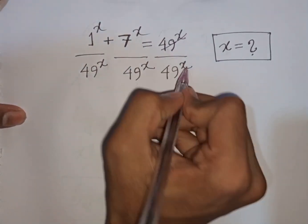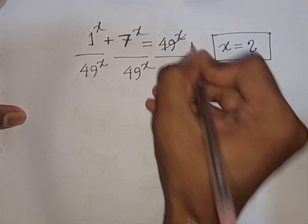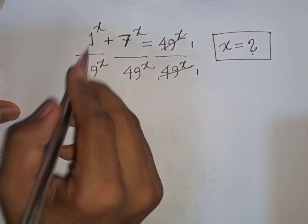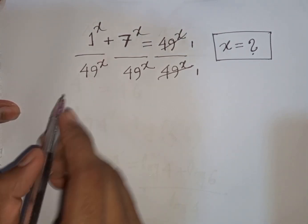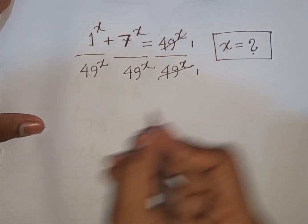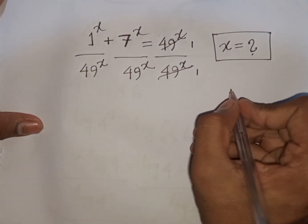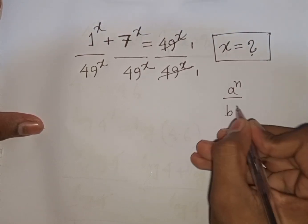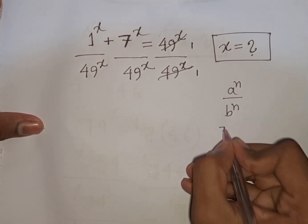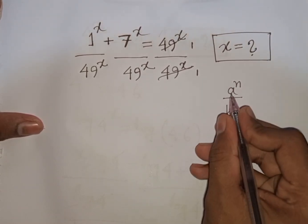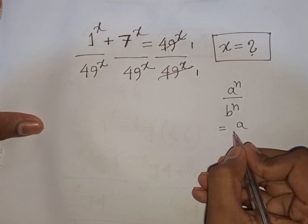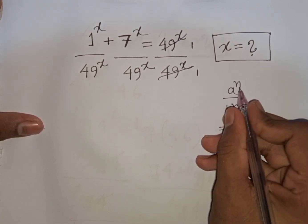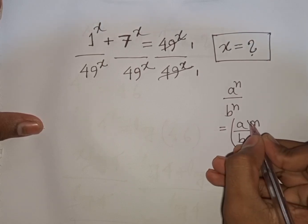This will be cancelled. Now we have the same power x but different bases. Remember this exponential rule: a power n over b power n equals (a over b) bracket to the common power n.